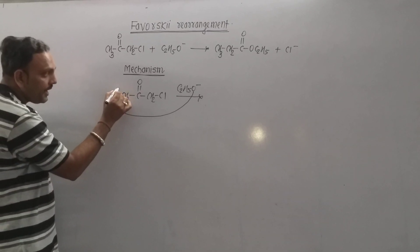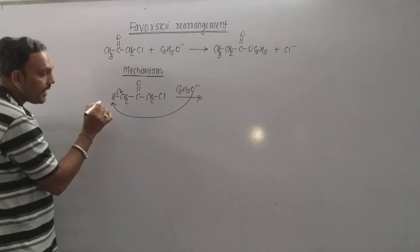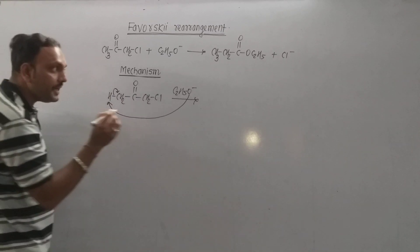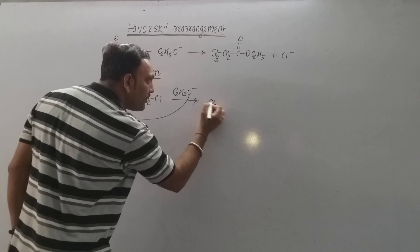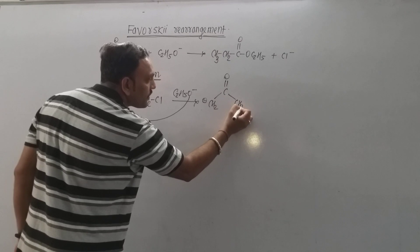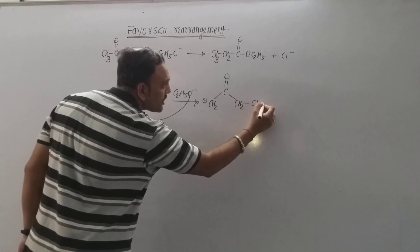Carbon being more electronegative than hydrogen keeps electron pair towards itself. That leads to the formation of an intermediate, what we call carbanion. This is a very crucial step.